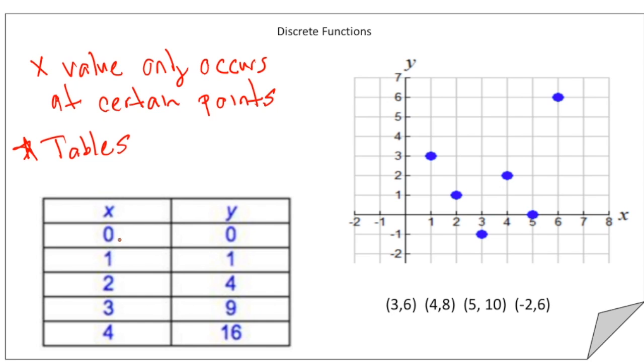For example, here we know that when x is zero, y is zero. When x is one, y is one. When x is two, y is four. But notice, there's nothing in between the one and the two. There's no 1.5 or 1.25, right? It's only just a few select x values and y values. That's a sign that the function is discrete.